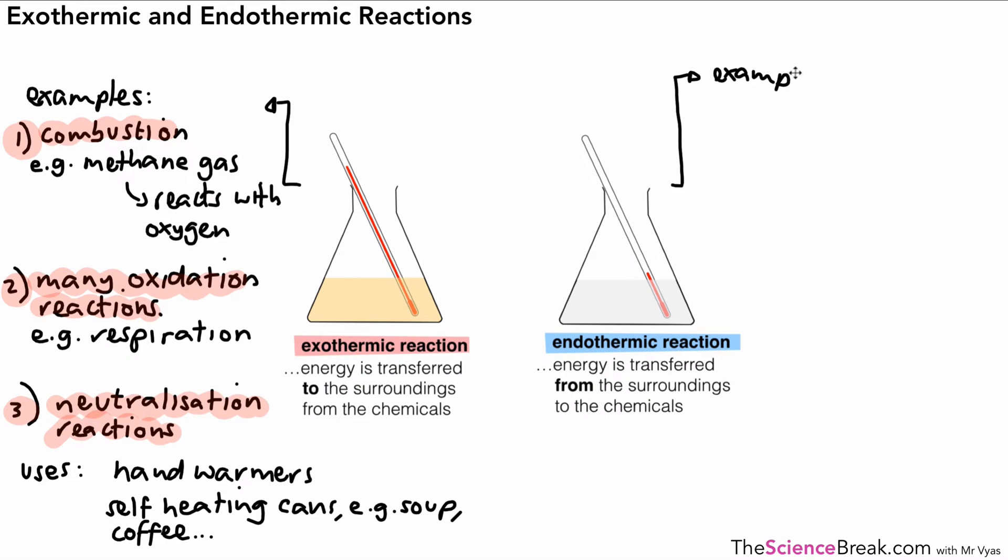Okay so examples of our endothermic reactions we have a couple that we need to know and remember and the first one is that of what we call thermal decomposition. So this is a reaction where a chemical breaks down or decomposes and one example of that which you may have come across before is that of calcium carbonate. Calcium carbonate actually thermally decomposes to make calcium oxide and carbon dioxide but that's an endothermic reaction.